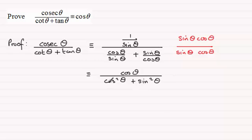And we should be familiar with the fact that cos squared theta plus sine squared theta is identical to one. So we've got cos theta divided by one, which is clearly cosine theta. And there we go.